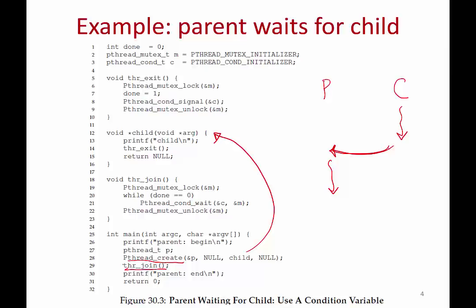The join function checks if the child is done, otherwise it will wait. There is a pthread condition variable declared and a shared variable done. The parent checks if done is 0 — if the child is not yet done, the parent will simply wait by calling wait on the condition variable. The parent thread goes to sleep. When the child finishes, it sets done to 1 and calls signal on the condition variable, which wakes up the parent so it can continue execution.